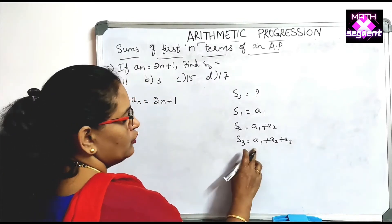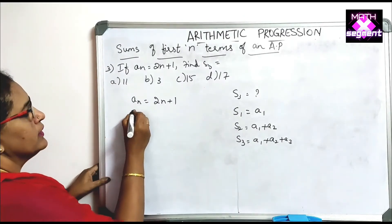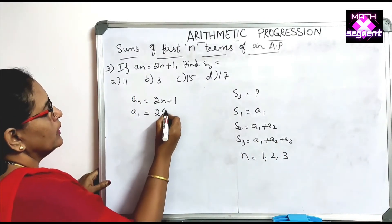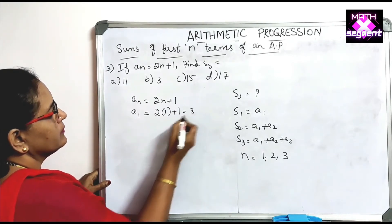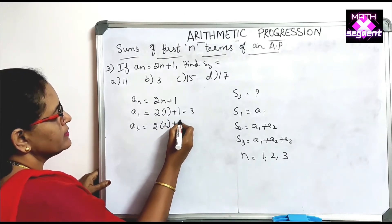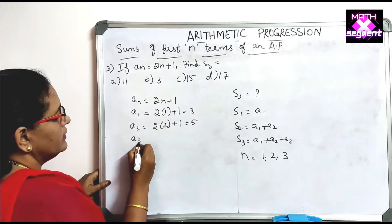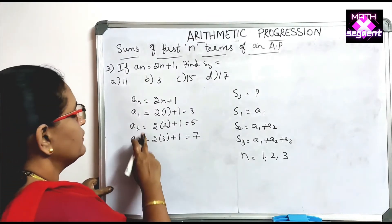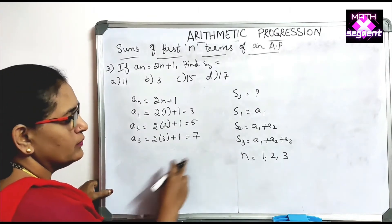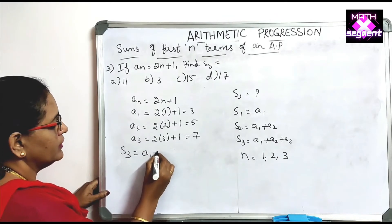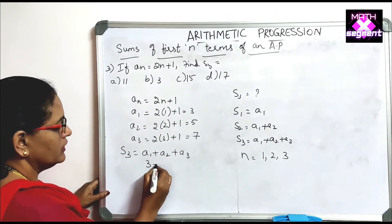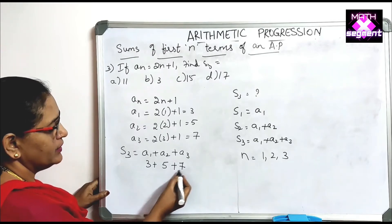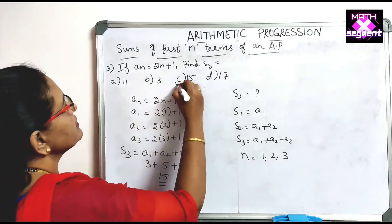Substituting: A1 equals 2(1) plus 1 equals 3; A2 equals 2(2) plus 1 equals 5; A3 equals 2(3) plus 1 equals 7. Now S3 equals A1 plus A2 plus A3 equals 3 plus 5 plus 7 equals 15. The answer 15 corresponds to option C, which is correct.